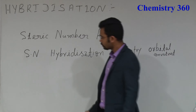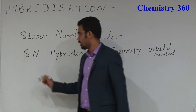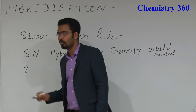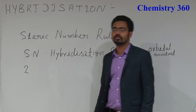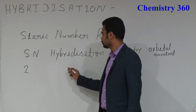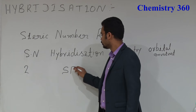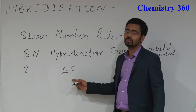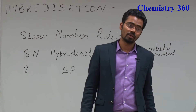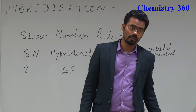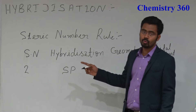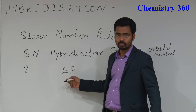If the steric number is 2, then the hybridization will be sp. The steric number equals the number of hybrid orbitals, so a steric number of 2 means 2 hybrid orbitals, and the hybridization is sp.